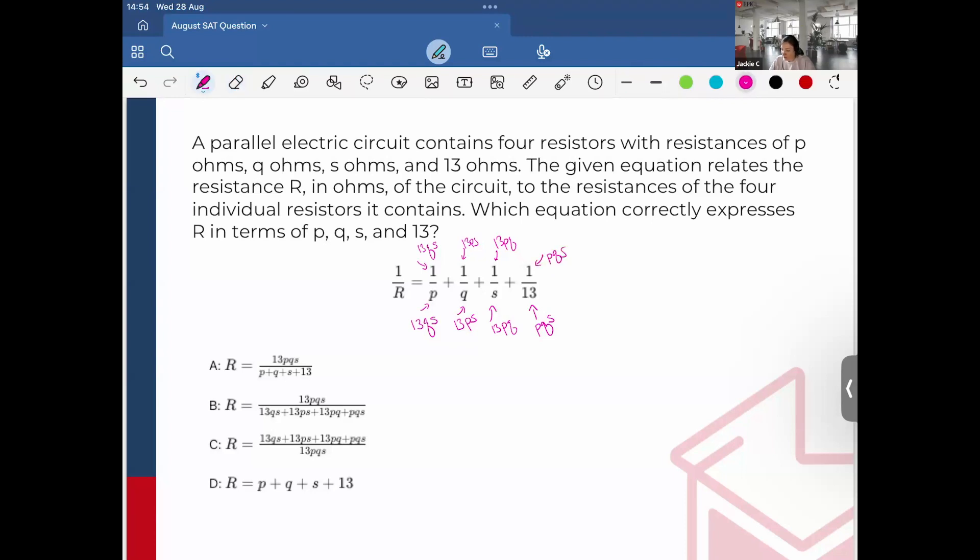So then when you do that, you would have 1 over R is equal to, I'll put it in black, 1 over R is equal to 13qs plus 13ps plus 13pq plus pqs all over the common denominator, which would be 13pqs. That's what this becomes when we find the common denominator.